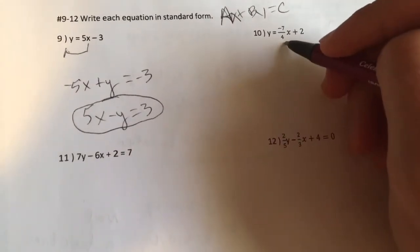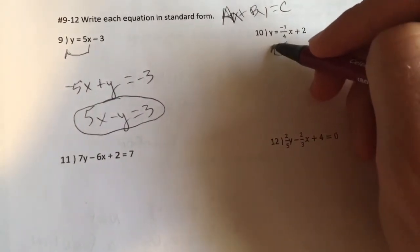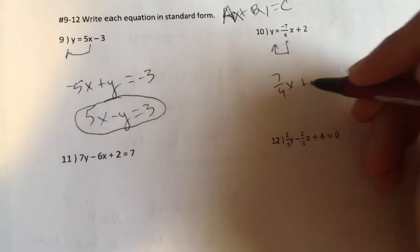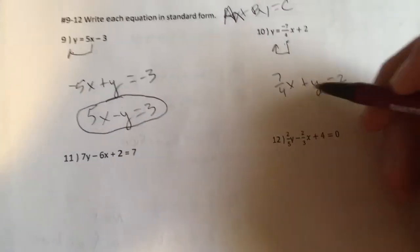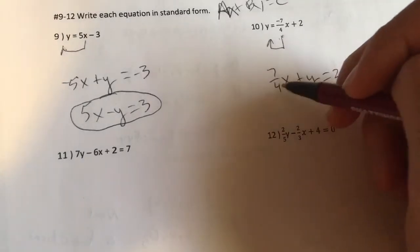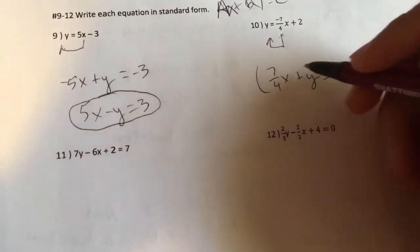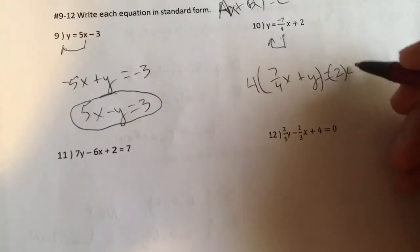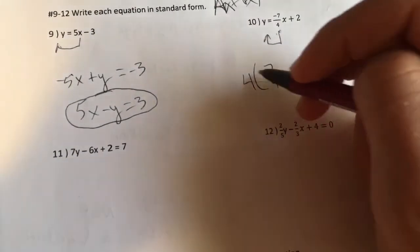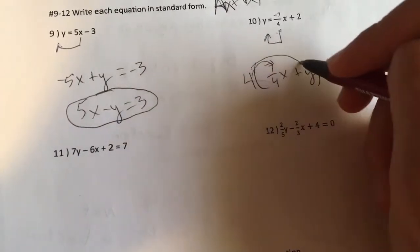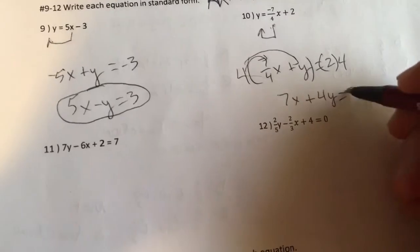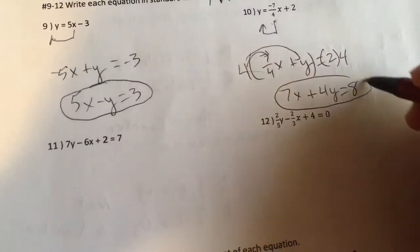All right. What I'm going to do first here on 10 is to move this over. 7 fourths x plus y is equal to 2. Both positive. That's good. But that is a fraction. So, the way to get rid of 7 fourths is to multiply everything by 4. The denominator there. That's going to cancel out. 4 times 7 fourths is just going to be 7x plus 4y equals 8. And I'm in standard form.